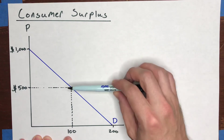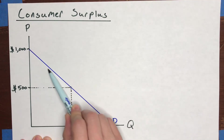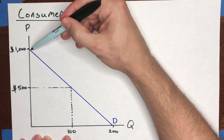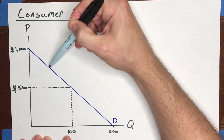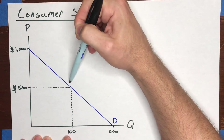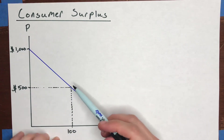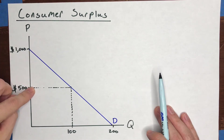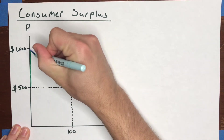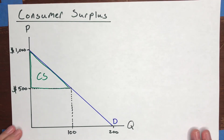The consumer surplus in this market is going to be the triangle made up of the area below the demand curve and above this price line. Why would that be the case? The demand curve tells you the highest price that each consumer would be willing to pay for every unit of the good — that's the willingness to pay mapped out on the demand curve. The price tells you the price that each consumer actually has to pay. Consumer surplus is equal to the difference between those two numbers.